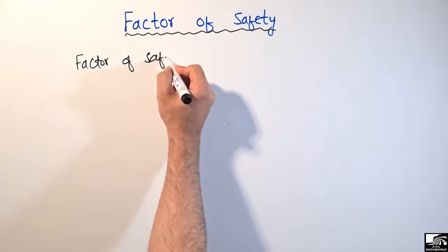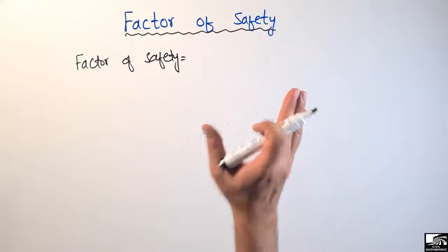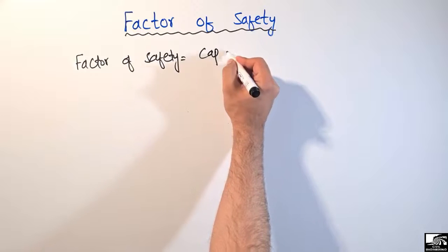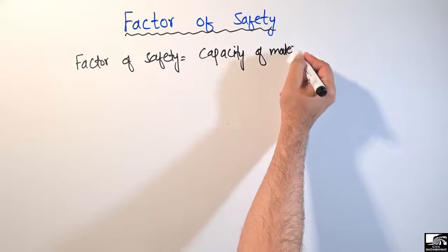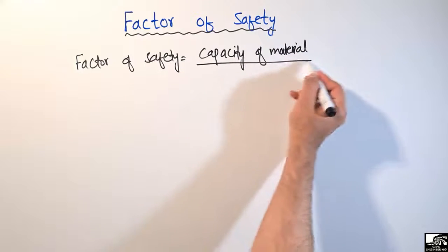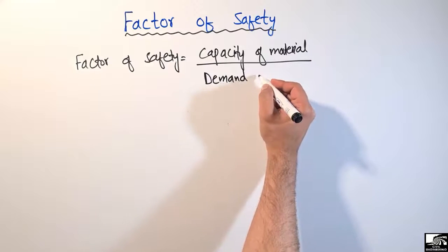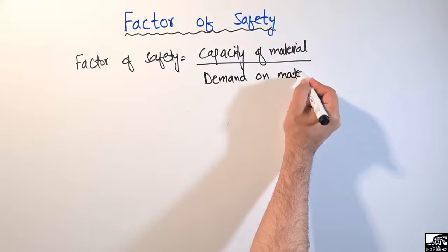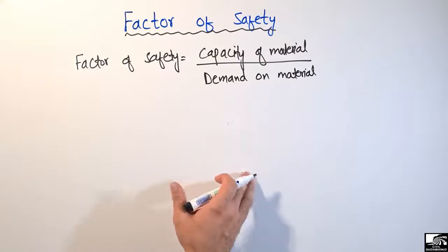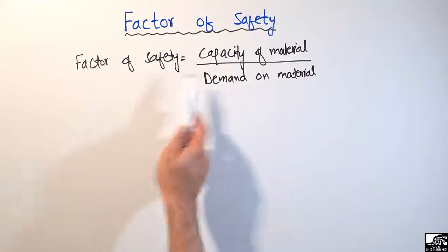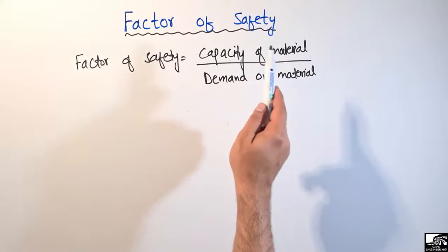So what is factor of safety? The factor of safety is the ratio of the capacity of a material to the demand on the material. It refers to how much strength the material has versus how much load is coming on the material. I will explain this further with the help of an example so it will be more easily understandable.